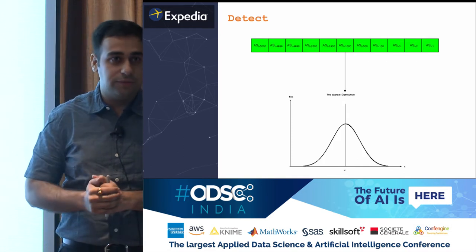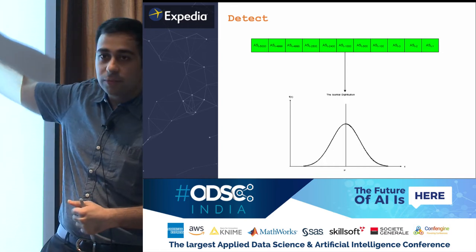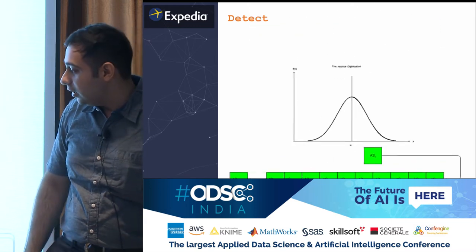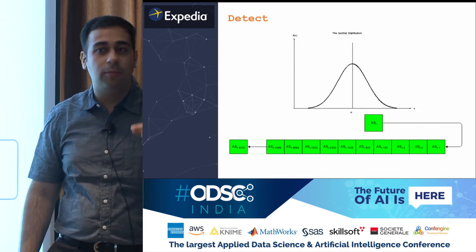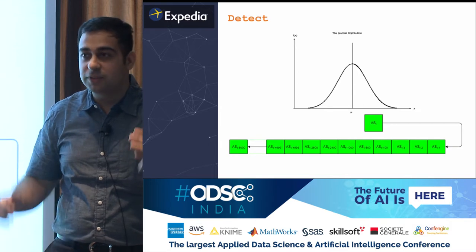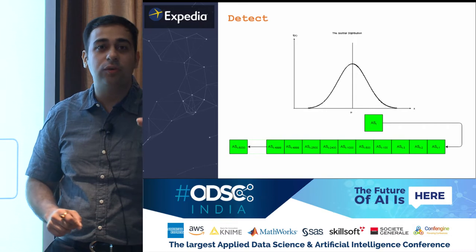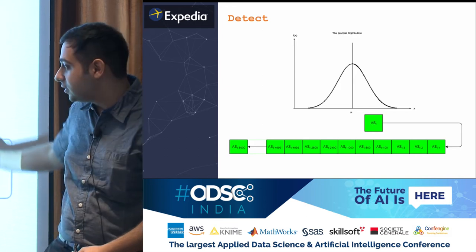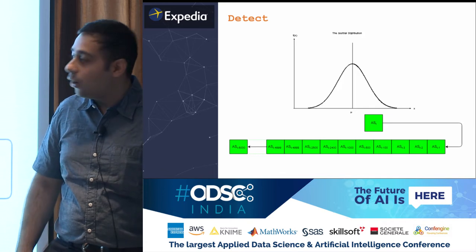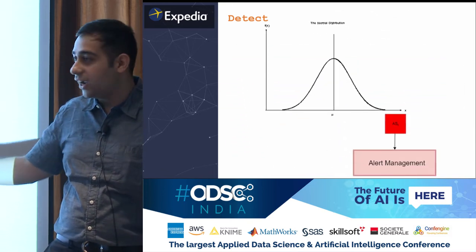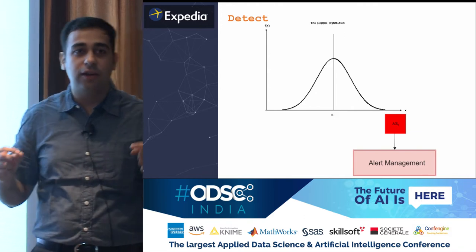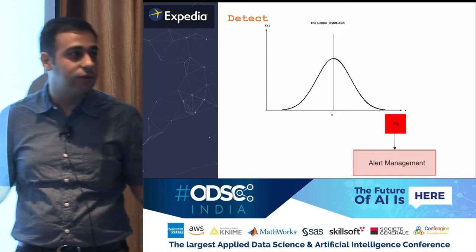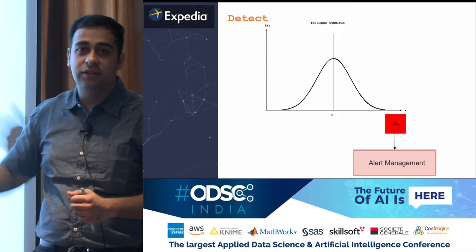At any given instant, we have a pool of anomaly scores. We use this pool to calculate a normal distribution. At any time t, we check whether the current anomaly score resides within that normal distribution. If yes, the actual value is non-anomalous and the score is pushed back into the pool. If the anomaly score resides outside the normal distribution, the actual value is anomalous and is passed to the alert management system to notify the relevant teams. This is how the anomaly detection algorithm works in action.